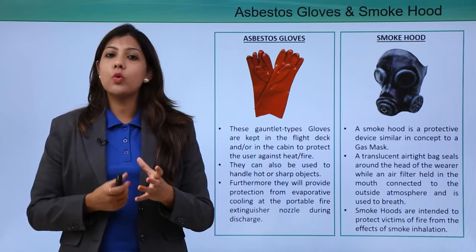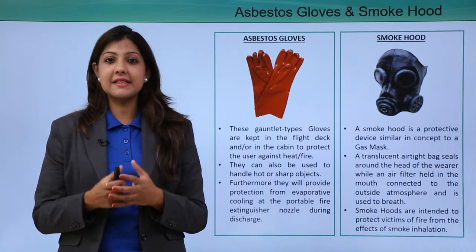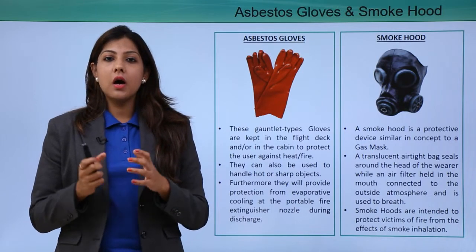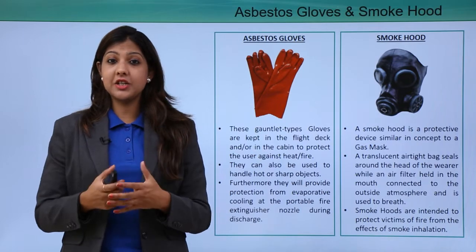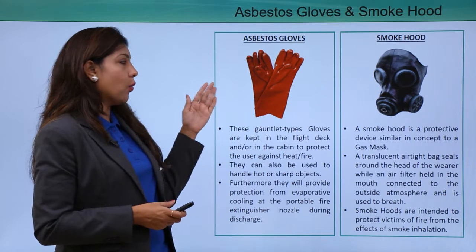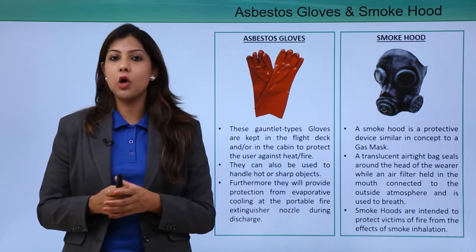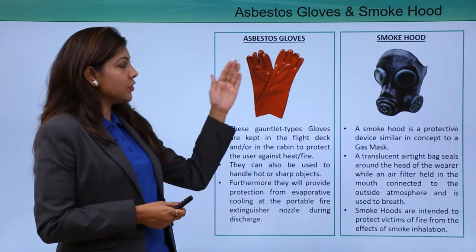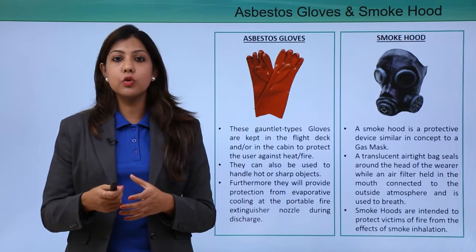Asbestos gloves are located inside the cabin and are worn when fighting fire to protect your hands and body. They are also used when touching anything hot or cold to prevent burns or frostbite, and can be used to handle any sharp object that you would not want to touch with bare hands.